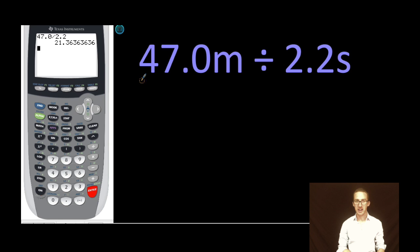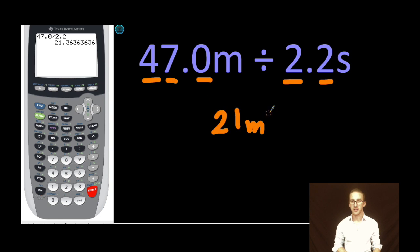In this measurement I have one, two, three sig figs, they're all significant there. In this measurement I have two sig figs. So my final answer should have just two sig figs. So as I look at my calculator I'm gonna round this to 21 meters per second because I'm dividing them.